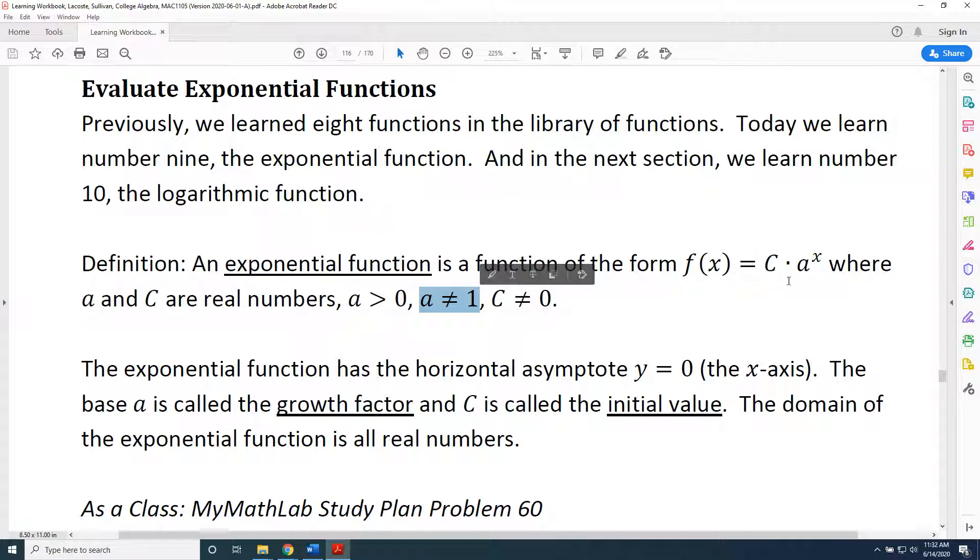Now, a ≠ 1. Well, if a was equal to one, what would happen? One is an interesting number, because when you multiply one by itself, no matter how many times, you simply get one.